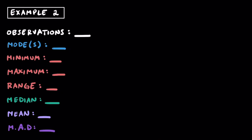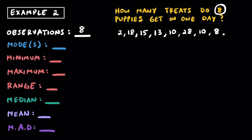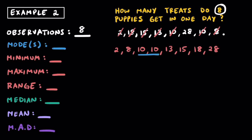Here's one more example. Our statistical question is: how many treats do 8 different puppies get in one day? These puppies responded with the number of treats they got. If you're feeling super big brain, pause the video and try this on your own — otherwise let's go over it together. There are 8 different puppies, so we have 8 observations. Ordering them from least to greatest: 2, 8, 10, 10, 13, 15, 18, and 28. It's easy to spot the mode — there are two 10s, and that's the only number appearing twice, so 10 is our mode.